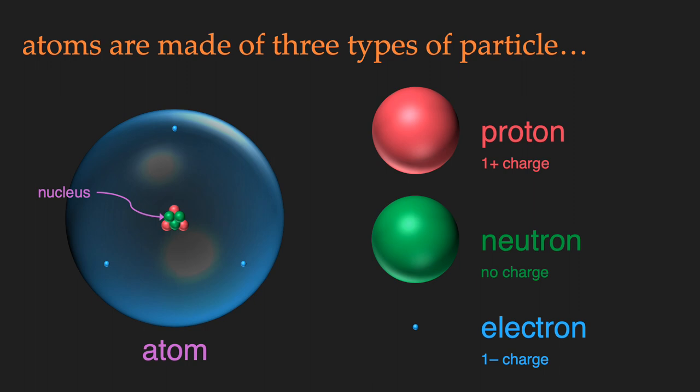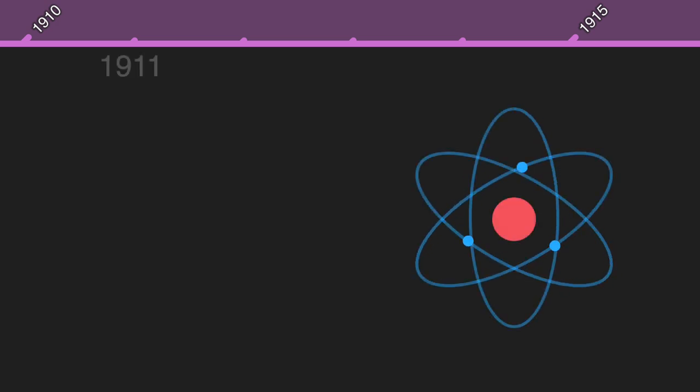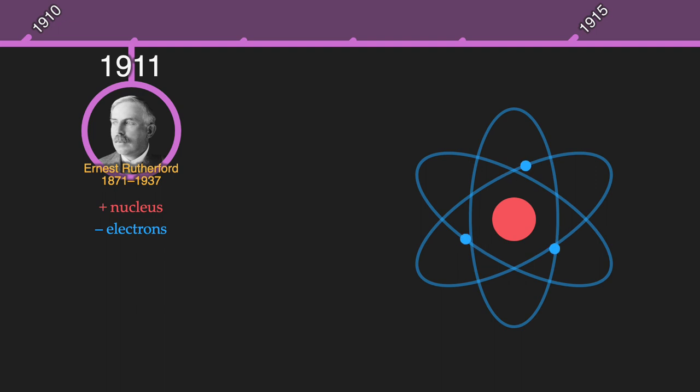This view of the atom wasn't always accepted by scientists. Scientists knew the atoms had a positively charged nucleus surrounded by electrons since around 1911 when the Rutherford model of the atom was proposed.